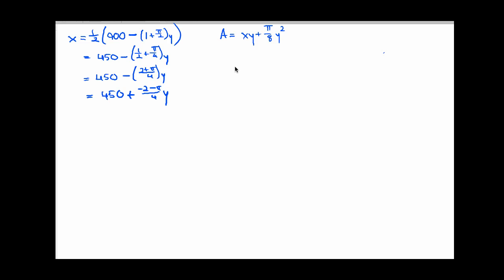I've copied down some information from the previous slides. Here's the area formula, and here's the constraint that we just came up with. In these succeeding three lines here, I've just done some arithmetic to simplify things. This comes down to x equals 450 plus negative 2 minus pi over 4y when simplified. So now I'm going to take that x value or that x expression and plug it in right there and see what I can get for my new improved area formula. So this is going to be kind of big: 450 plus negative 2 minus pi over 4y, the whole thing times y plus pi over 8y squared.